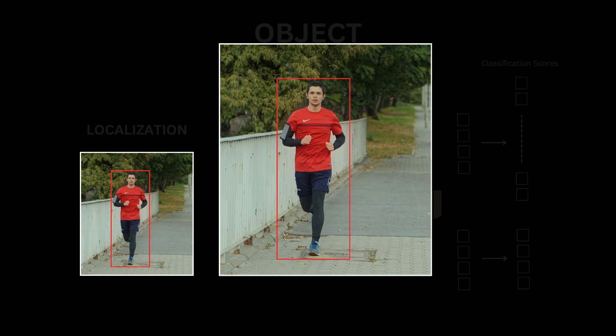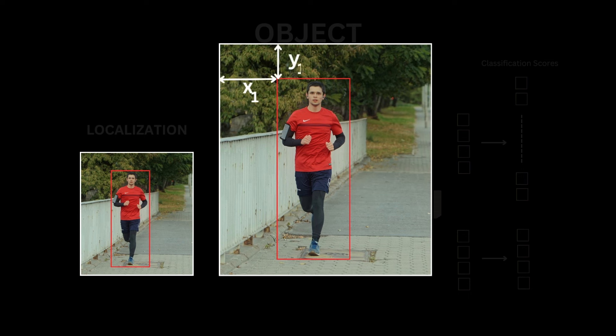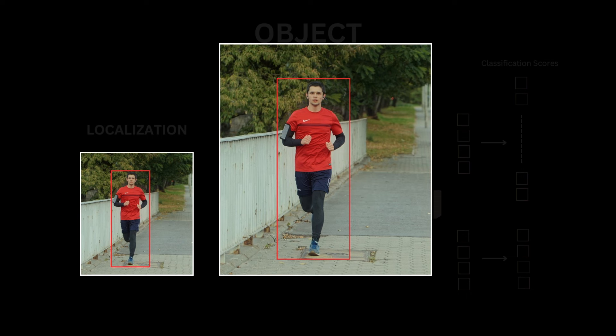In most cases, we predict axis-aligned boxes, but there are some implementations we'll see later on where we can predict boxes with arbitrary orientation. There are typically two ways to define these boxes. You could define it using the coordinates of the top-left corner, x1, y1, and the coordinates for the bottom-right corner, x2, y2. Another way is to use the XY coordinates of the center of the box and the width and height of the box.